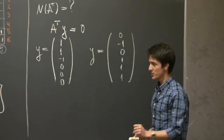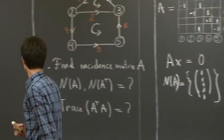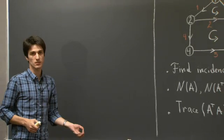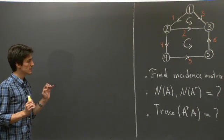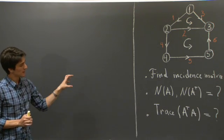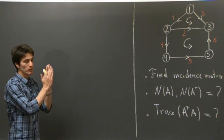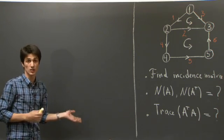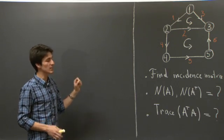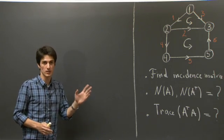And now, let's concentrate our attention on finding the trace of A transpose A. I'm going to do it right here. So, the trace of a matrix is the sum of its diagonal entries. And we've seen this many times already, that the diagonal entries of A transpose A are precisely the magnitude squared of the columns of A. The 1, 1 entry is the magnitude squared of the first column, the 2, 2 entry is the magnitude squared of the second column, and so on.